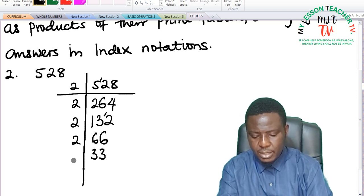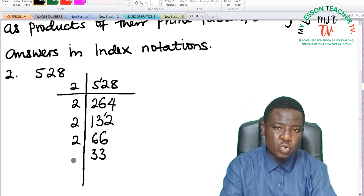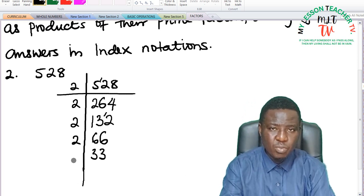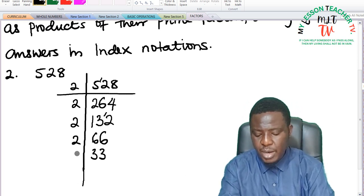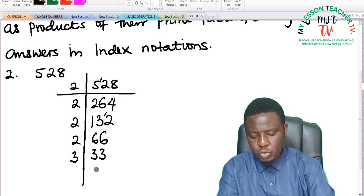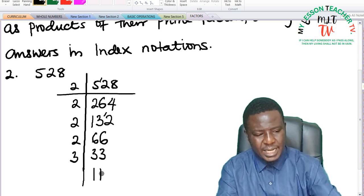33 is not a prime number. You divide by 2, but since 33 is not divisible by 2, I'll take the next prime number, which is 3. So 3 into 33 is 11.